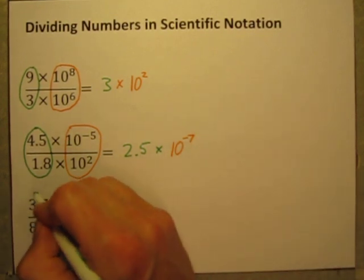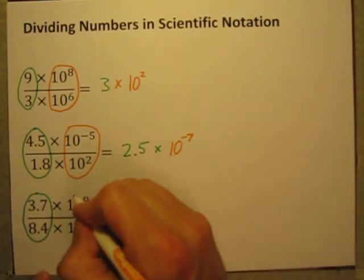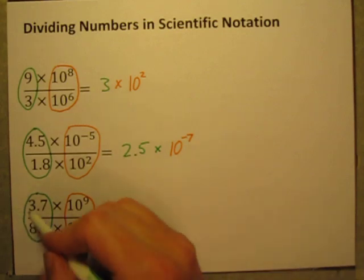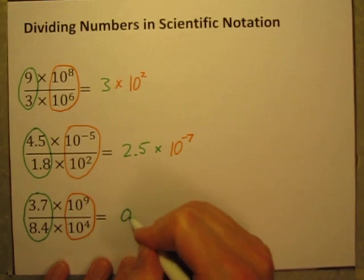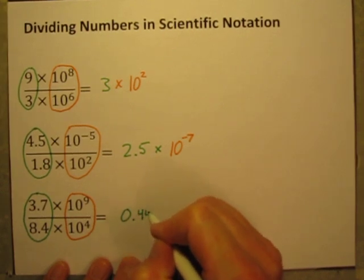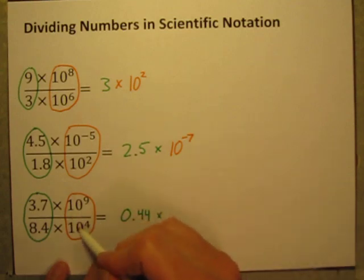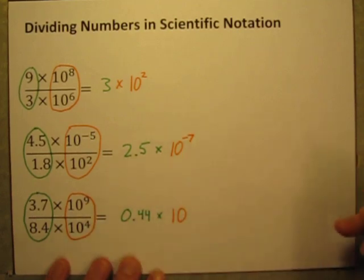Last one. Divide the numbers. Divide the powers of 10. When you do 3.7 divided by 8.4, you get 0.44 approximately. When you divide these powers of 10, remember, you're subtracting the exponents now. So, 9 minus 4 is 5. That is 10 to the 5th power.